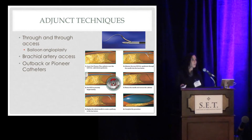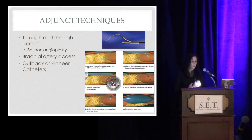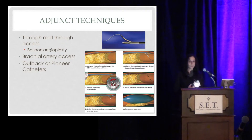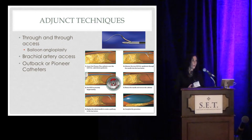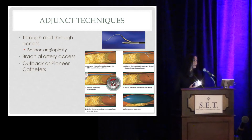When I was first asked to present this case, I was thinking about going through some adjunct techniques for crossing the occlusions, although probably everybody in this room already knows that. We focused on getting through-and-through access in order to allow balloon angioplasty. Certainly utilizing brachial artery access is sometimes effective if you're not able to go from both femorals. Throughout the case, we also discussed utilizing an Outback or Pioneer catheter. In that iliac and aortic segment, we chose not to do so for the risk of the needle not quite being long enough to re-enter, but the Pioneer with IVUS on the re-entry device itself is certainly another very effective option.